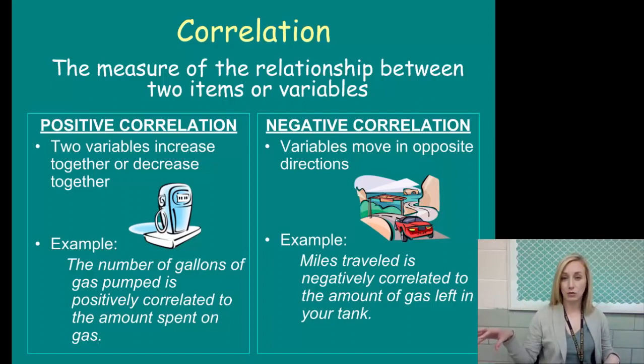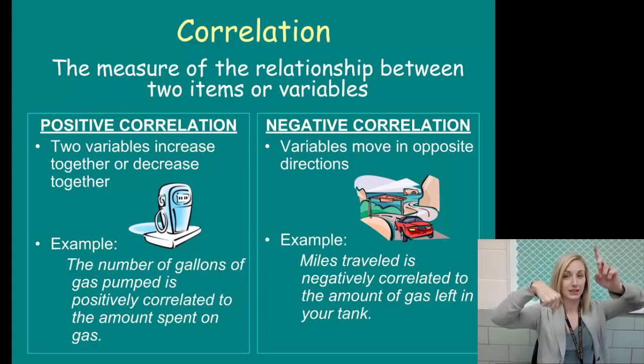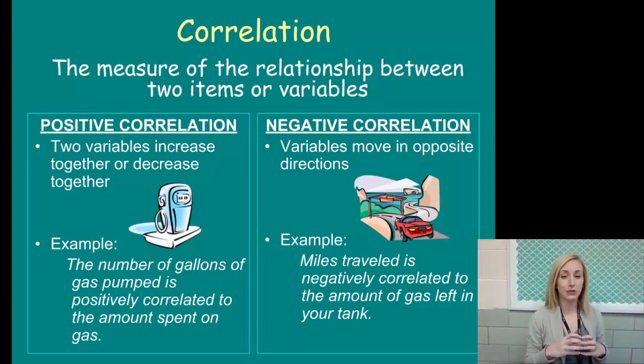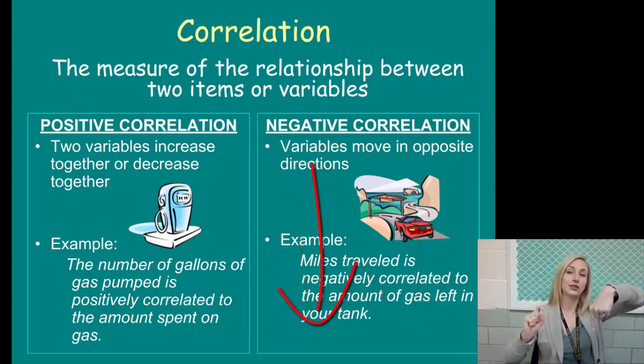In a negative correlation, the variables move in opposite directions. As one rises, the other falls. But they could also switch. As one falls, the other rises. So an example: miles traveled is negatively correlated to the amount of gas left in your tank. The more you travel, the less gas you have in your tank. Just like the less gas you have in your tank, the more you have traveled.